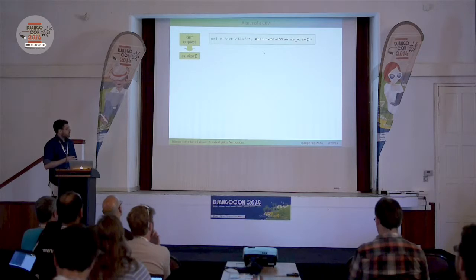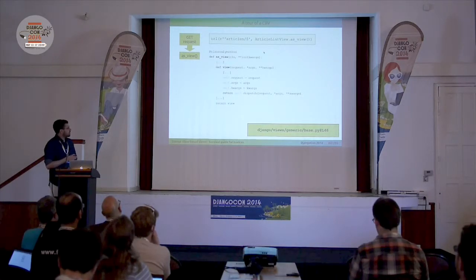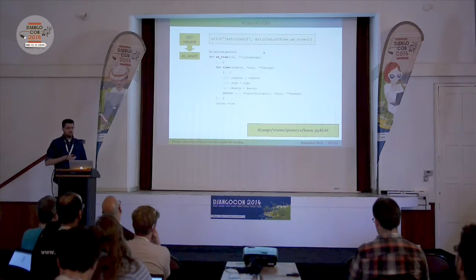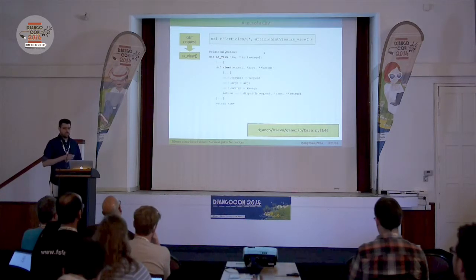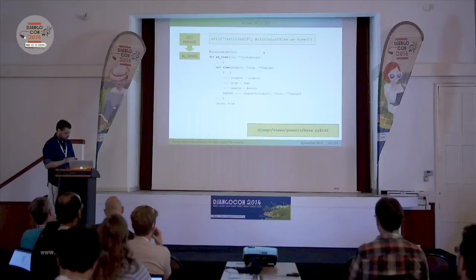In my example, I routed the articles URL to ArticleListView as a view function. The GET request is processed by the as_view() function. This is a very important function — a rather long one. It basically returns a function. So, as you can see, class-based views are just a trick to allow you to write your function-based views in a more comfortable manner, because the class-based view returns a function-based view.